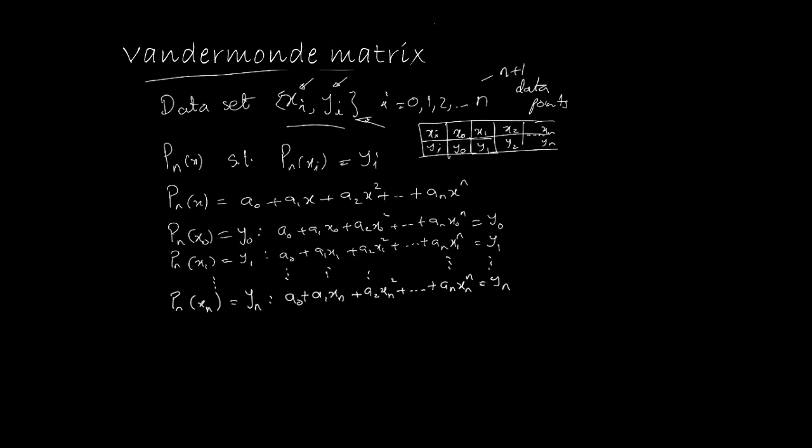So, we've got these n equations. Now keep in mind, what are the unknowns here? Remember, x0, x1, xn, all of these are, in fact, values that we have. These are data points that we have. What are unknowns here are, in fact, these coefficients, the a0, a1. So, the ai's are the ones that we want to find.